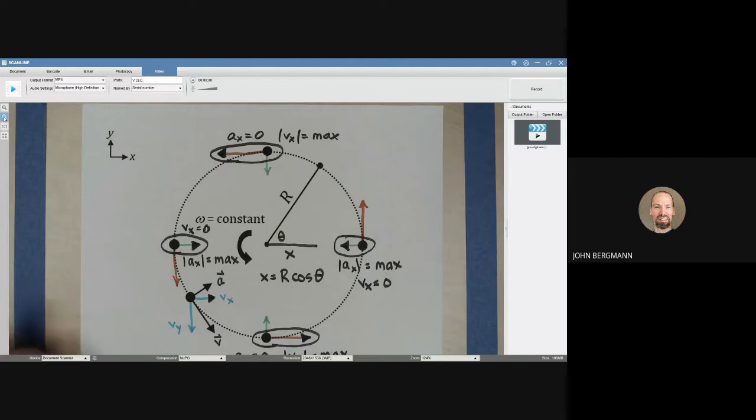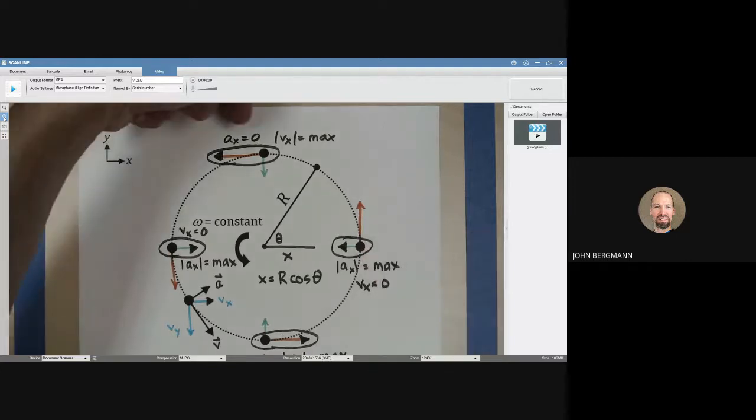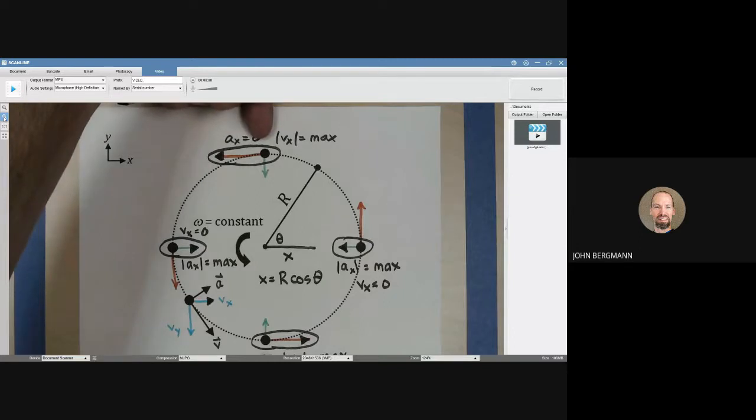in uniform circular motion, and we mentioned that if we focus on the circled quantities, the accelerations in the x-direction were maximized on the left and right extremes. The velocities in the x-direction were maximized here at the middle portions.